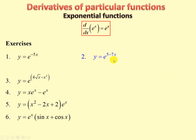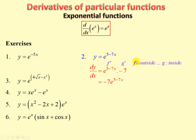Exercise 2: e to the 5 minus 7x. We differentiate the outside function, e to the 5 minus 7x, and it stays the same. Times the derivative of the inside function — differentiating 5 minus 7x gives minus 7. So f prime is the outside function leaving 5 minus 7x as it is, and g prime is minus 7. Simplified: minus 7 e to the 5 minus 7x.